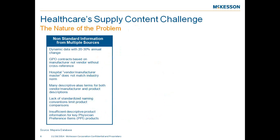That churn is due to new product introductions, vendor consolidation, and manufacturer consolidation. We're getting a lot of change. So trying to keep up with the 20 to 30% churn rate of our item masters becomes very difficult.